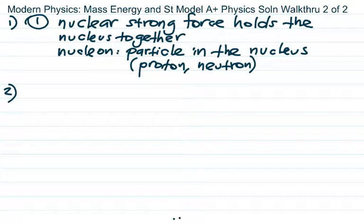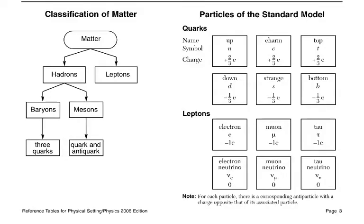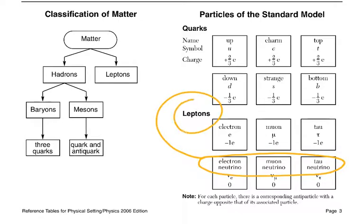Number two: tau neutrino, muon neutrino, and electron neutrino are all what? Let's check the reference table. All of the neutrinos — electron, muon, tau neutrino — are over here in the reference table. And what kind of particle are those? Lepton. So that's choice one.